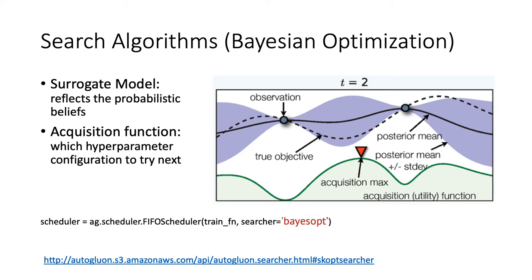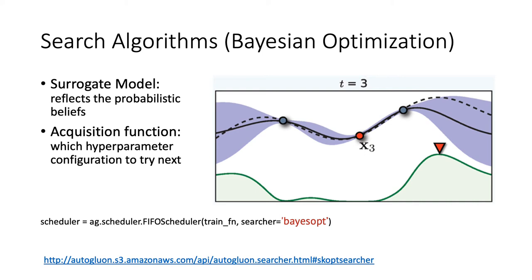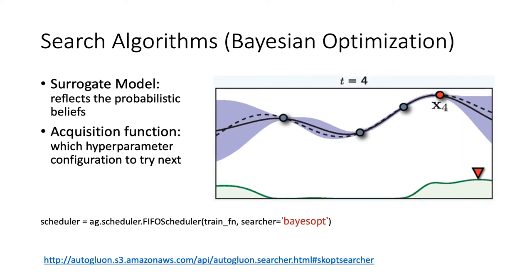AutoGluon has a built-in Bayesian optimization searcher. The surrogate model estimates the posterior distribution of rewards based on current observations, and the acquisition function measures the potential rewards in the search space and suggests the next configuration to try — balancing exploitation and exploration. In this example, we have two existing observations and the surrogate model estimates the posterior mean and standard deviation. The acquisition maximum is marked in the red rectangle. In the next iteration, the new configuration is evaluated and the surrogate model is updated. Iteratively, Bayesian optimization finds configurations near the global optimum. In AutoGluon, we can use Bayesian optimization in the backend by choosing 'bayesopt' as the searcher using the example code shown.